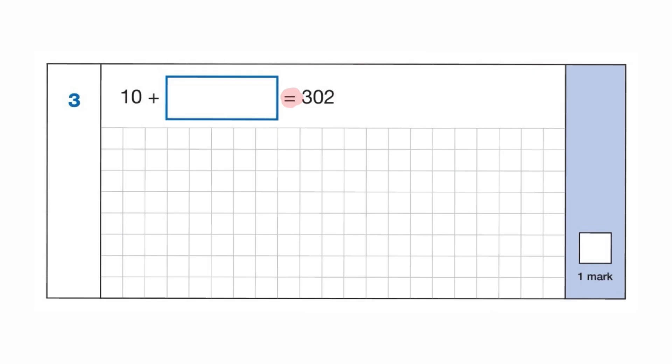And what most pupils would do is do 302 add 10 because it just pops into their head and they get 312. But 312 would be the wrong answer because we know the sum is already 302. So what we have to do, if we need to find a smaller number, we have to find this, which is this and this, which is a smaller number than the sum, then we need to subtract. So the calculation is actually 302 take away 10.